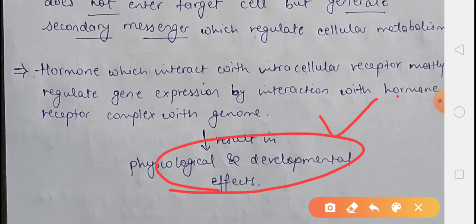So to summarize: for membrane-bound receptors, the hormone binds from outside the cell membrane, a secondary messenger is produced, which brings about biochemical changes. For intracellular receptors, the hormone directly enters the cell, binds to the receptor, and produces physiological and developmental effects.